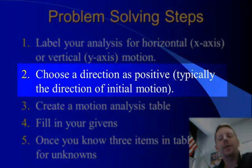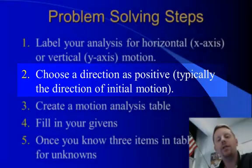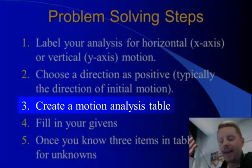Next, we need to choose a direction to be positive. And the easiest way to do this is if you pick the direction of an object's initial motion and call that positive, it's consistent. You really can pick any direction you want. But if you're consistent, you'll always be doing it the same way, less chance for error.